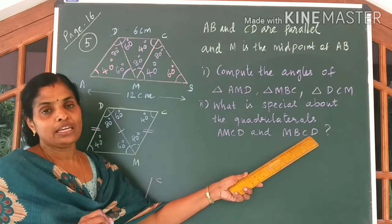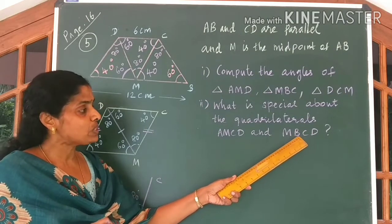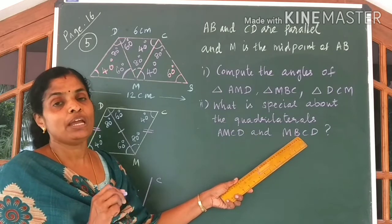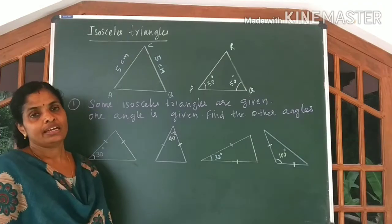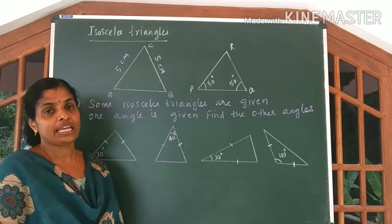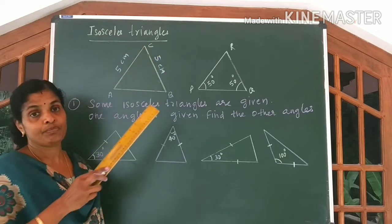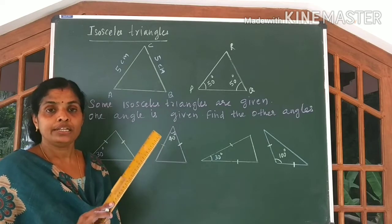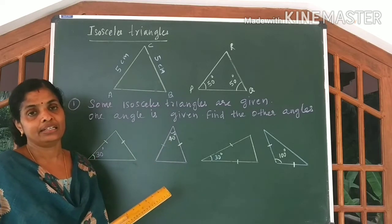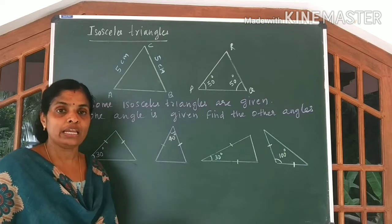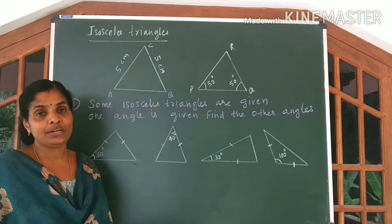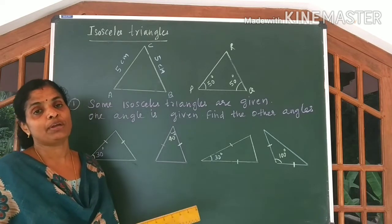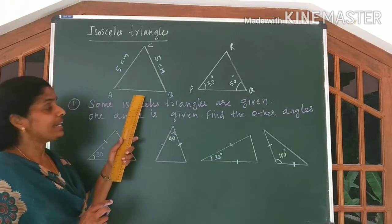The same condition you can use for MBCD. Using the same idea, you can say MBCD is also a parallelogram. Now, we are talking about isosceles triangles. An isosceles triangle can be defined in two ways. A triangle with any two sides equal can be called an isosceles triangle. Otherwise, a triangle with any two angles equal can also be called an isosceles triangle.